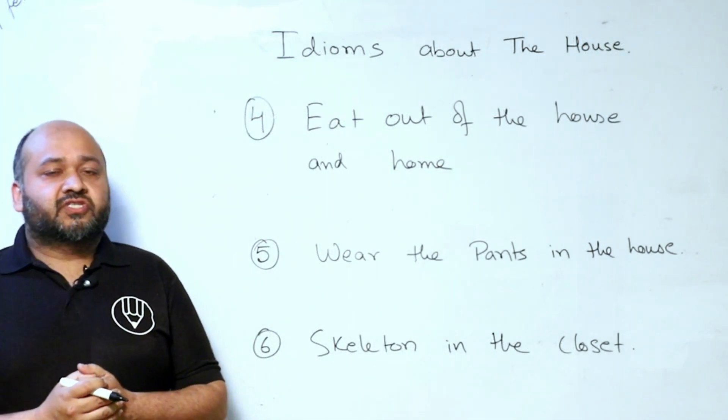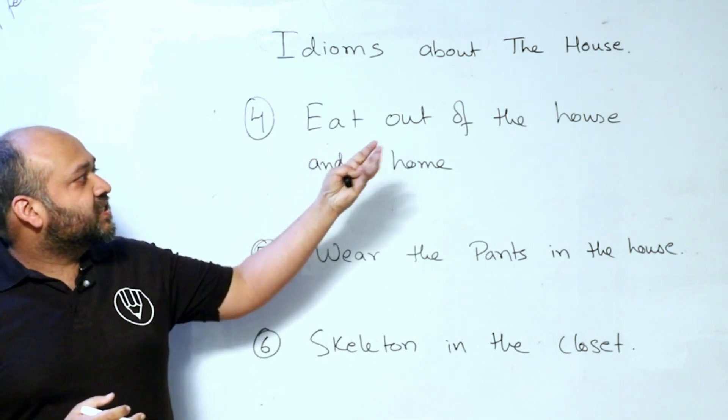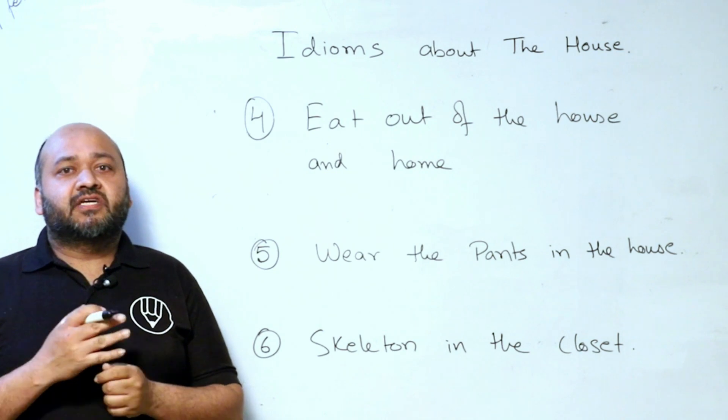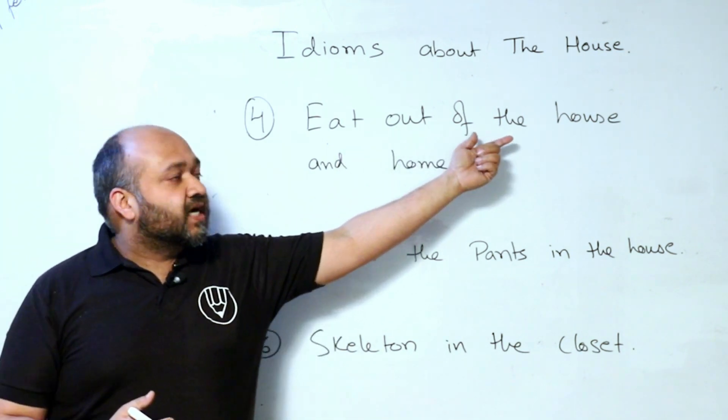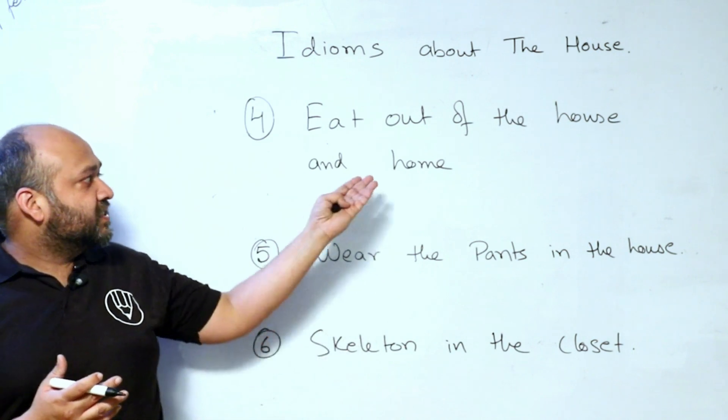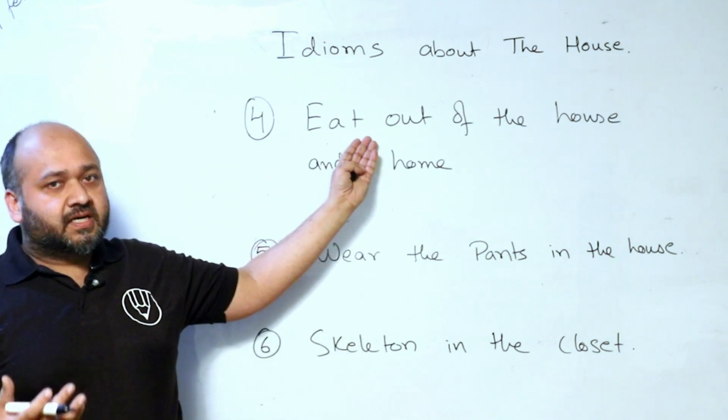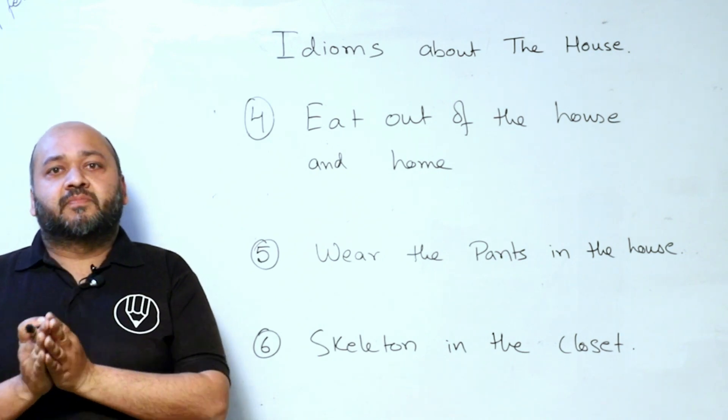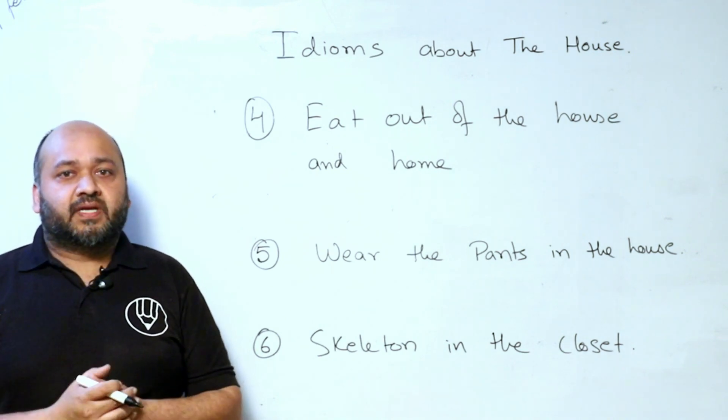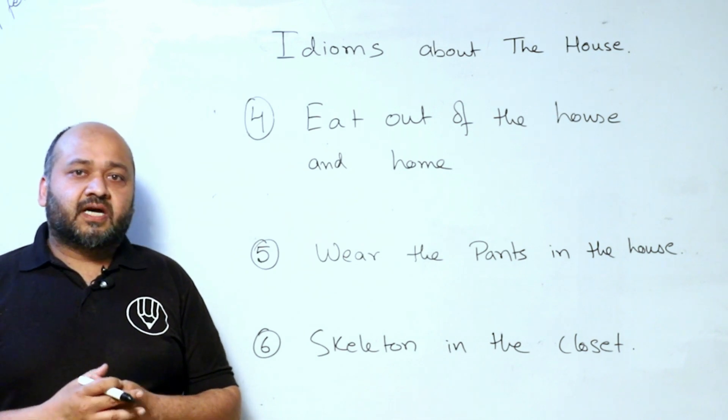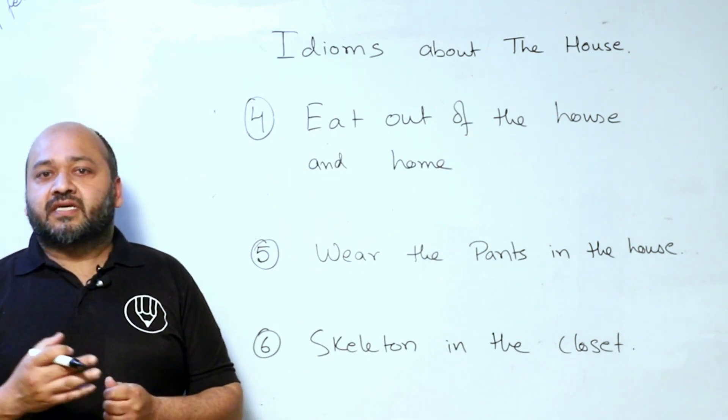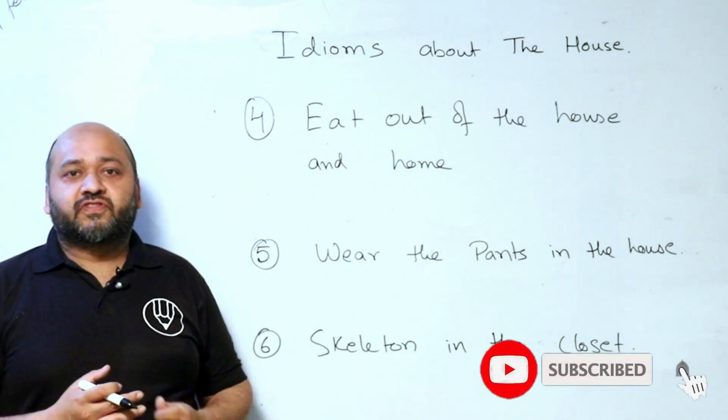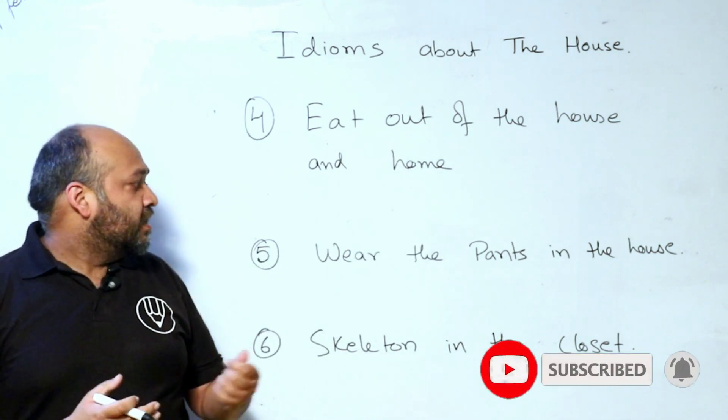Let's move on to the next three idioms. Next one is eat out of the house and home. Eat out basically means to eat outside the house. But if you look at this idiom, you eat out of the house or home, so you eat in someone else's house. Eat at somebody's place. You always eat with your friends. You can say that you eat out of the house or home.